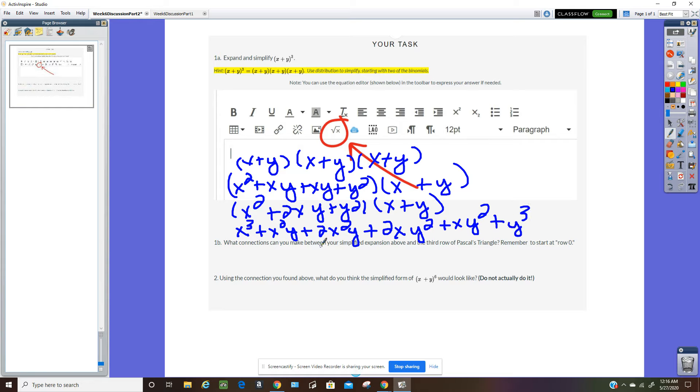Plus 2xy squared plus xy squared plus y cubed. And then combining like terms here, see if I have any like terms. There are some like terms here, these two and these two. I end up with x cubed plus 3x squared y plus 3xy squared plus y cubed.